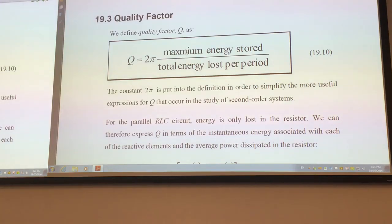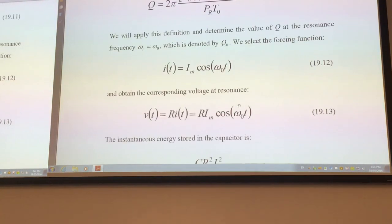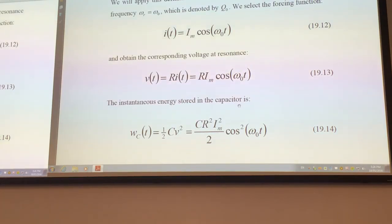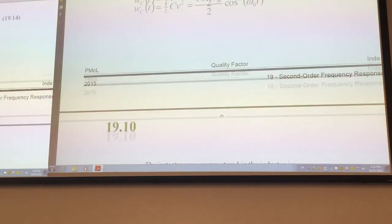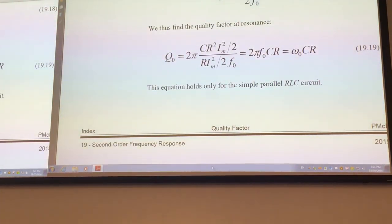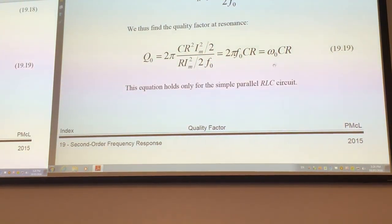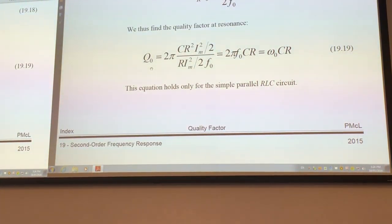The ratio of these two energies multiplied by two pi for mathematical reasons is called Q. We won't go into maths here, but eventually, for a simple or pure parallel RLC circuit, the quality factor at resonance is equal to simply omega zero CR.